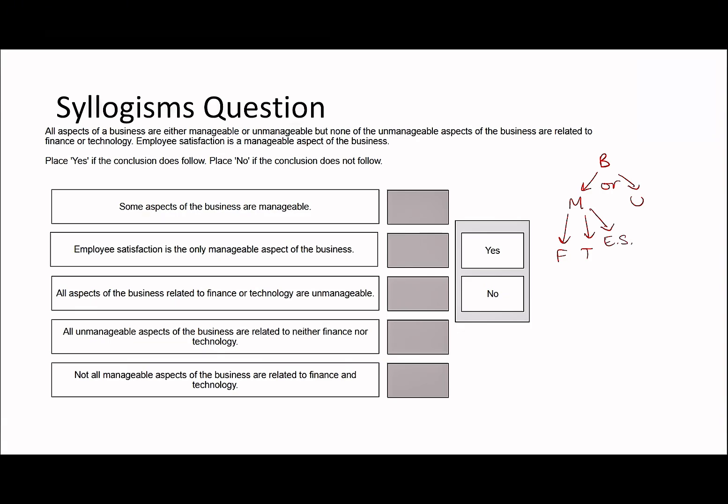The first statement says some aspects of the business are manageable. Well, from our diagram, it could be true that all of the aspects of the business are manageable — it could be that there's no unmanageable aspects. So we're creating the hypothetical. The opposite is true: all aspects could be true, therefore the original statement has to be false.